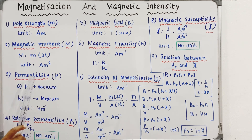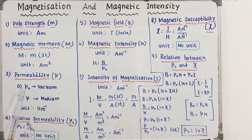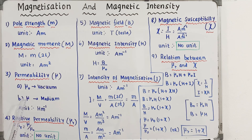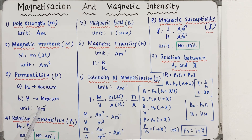Now let's talk about permeability, represented by mu (μ). The value of μ₀ (permeability of free space) is 4π × 10⁻⁷. This is the permeability of the medium. The unit of permeability is Henry per meter (H·m⁻¹).